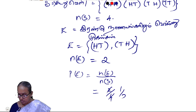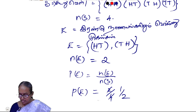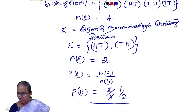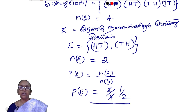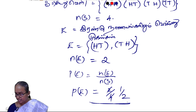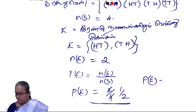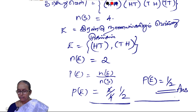1 by 2. So, the probability is 1 by 2. You can see the same thing: 1 by 2. Ok? 1 by 2.